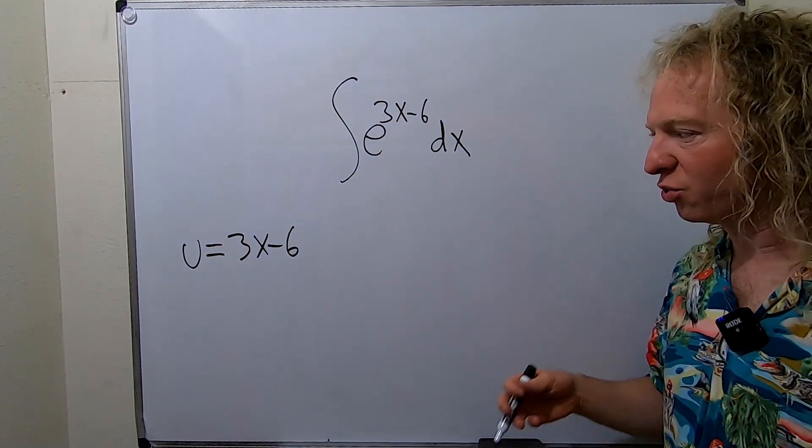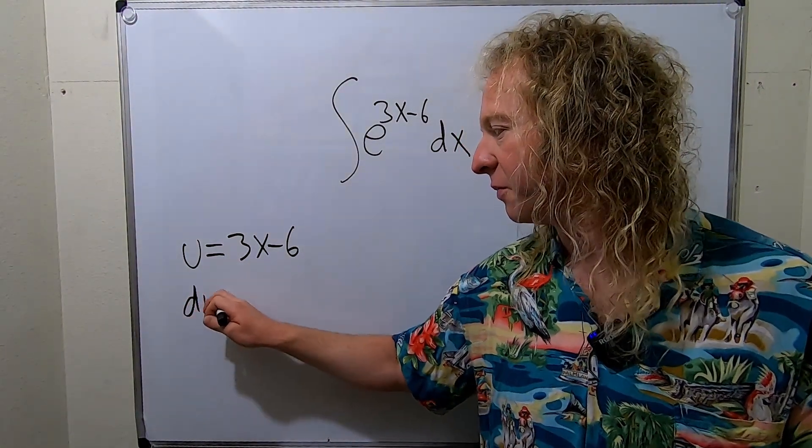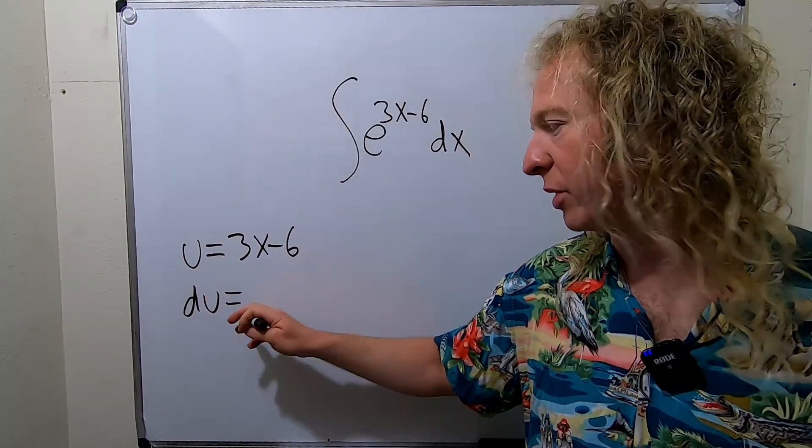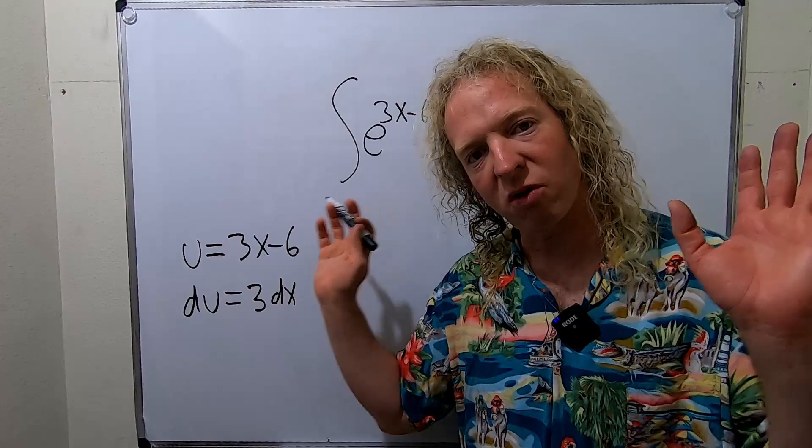And so now we'll find the derivative. So the derivative of u is simply du. This derivative here will be 3, so we have 3 dx. And this derivative is 0, so we don't worry about it.